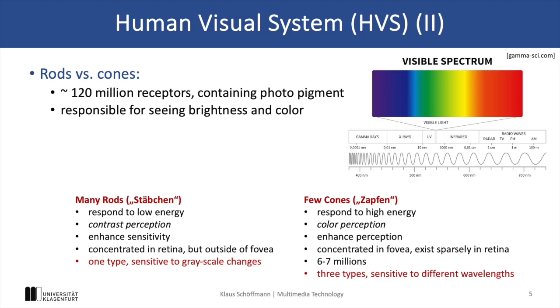Now, what is the difference between rods and cones? There are about 120 million rods in the human eye, which respond to low energy light and help us perceive contrast in shades of grey. Rods are highly sensitive and are concentrated outside the fovea, making them essential for seeing in low light conditions.